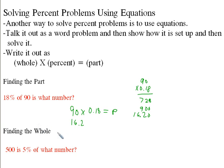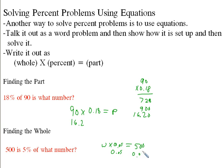Now over here — finding the whole. This one's a little bit harder, but you're trying to find the whole. We can just fill in the parts again. 500 is 5% of what number. So 500 is the part, which equals the whole times 0.05. Now all we have to do is divide both sides by 0.05 to get W isolated all by itself. So 500 divided by 0.05.